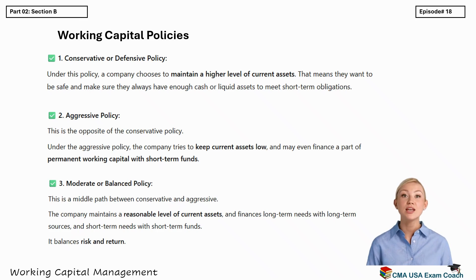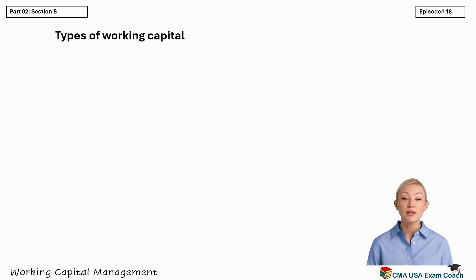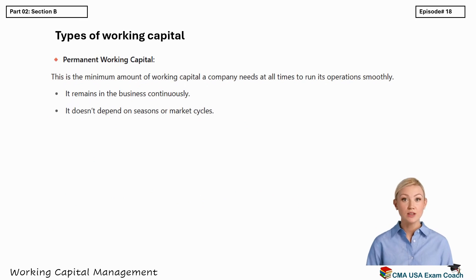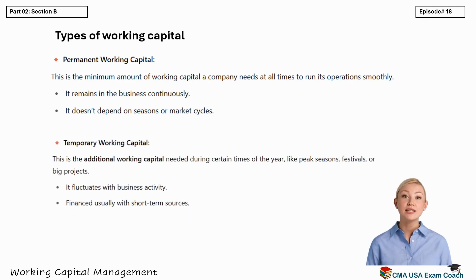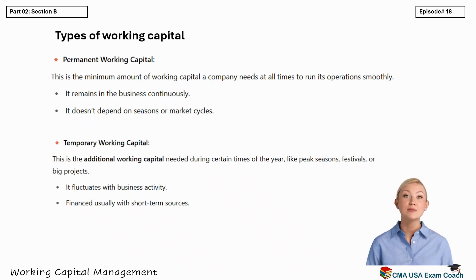Let's understand the two types of working capital a company deals with: permanent and temporary. Permanent working capital is the minimum amount of current assets a business needs at all times, regardless of the season or economic conditions — it's the base level of inventory, receivables, and cash that must always be available. Temporary working capital is the additional amount required during certain times of the year, such as seasonal demand spikes or large one-time orders. This type goes up and down based on business activity, and is usually financed using short-term borrowing or temporary credit arrangements.